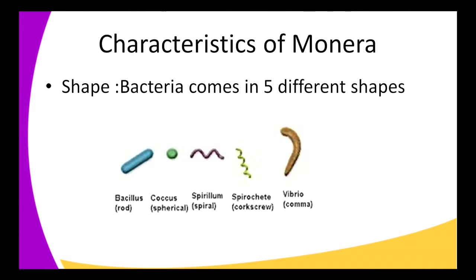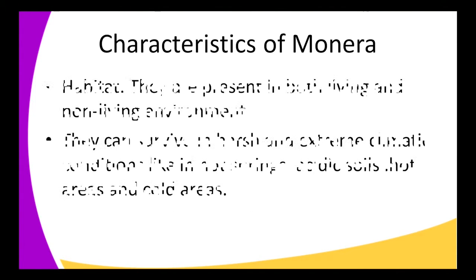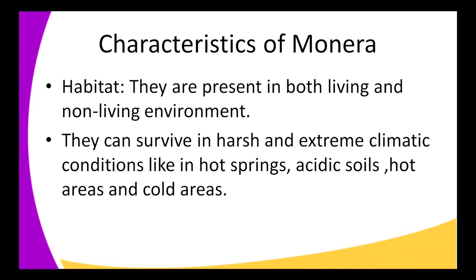Another characteristic is shape. We have: bacilli — rod-shaped; cocci — spherical; spirillum — spiral-shaped; spirochete — corkscrew-shaped, as seen in the illustration; and vibrio — comma-shaped. These are the five main shapes by which you can identify bacteria.